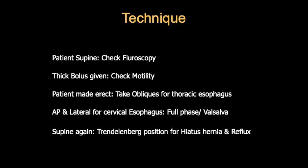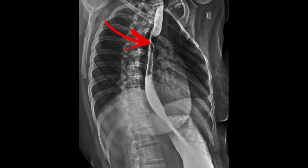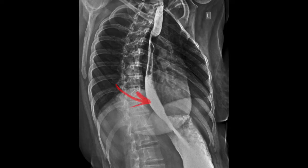We evaluate the valleculae and the piriform fossae, as well as the dorsal and abdominal parts of the esophagus, by giving bolus and taking pictures in oblique positions. We take oblique views so that the barium column moves off the spine — in AP view it would superimpose on the spine. A slight oblique confirmed on fluoroscopy is used, then we give the bolus.